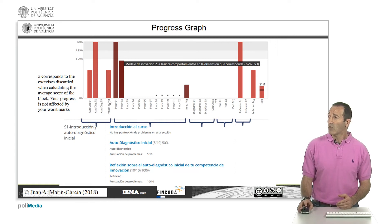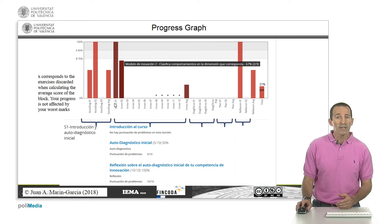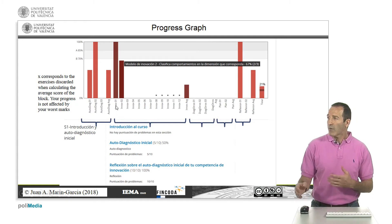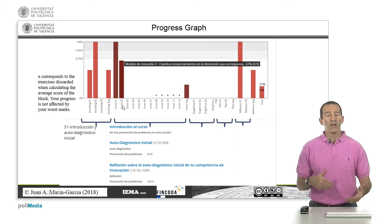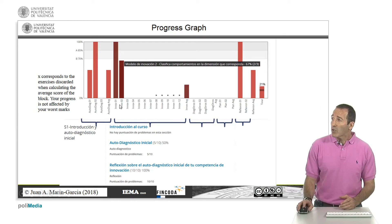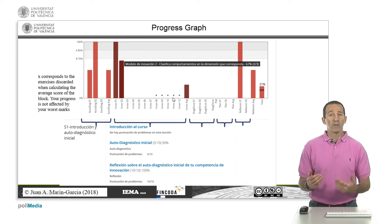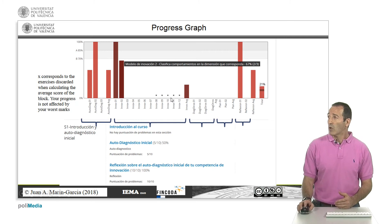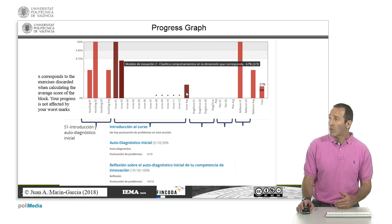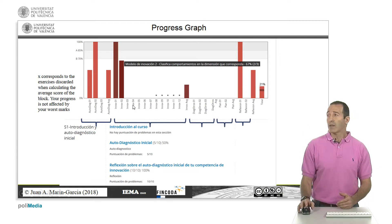Next to that you can see a wide column, this one that I'm pointing to, with tasks related to the model of innovation, how it can be defined, its components, that sort of thing. There are many exercises, but you can see that some of them are tagged with an X at the top, these that I'm pointing at. The X means that these exercises are optional, so it's possible to score 100% of the average mark for this group of exercises simply by doing the first seven.